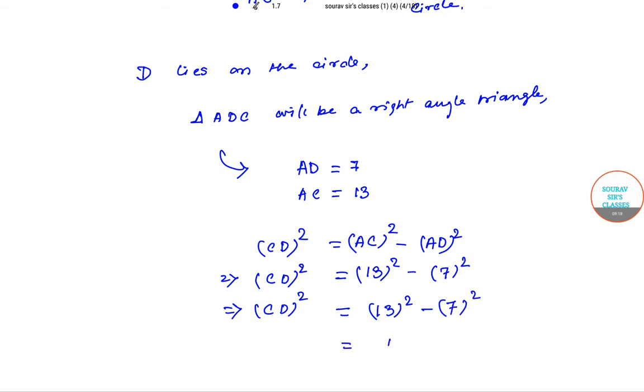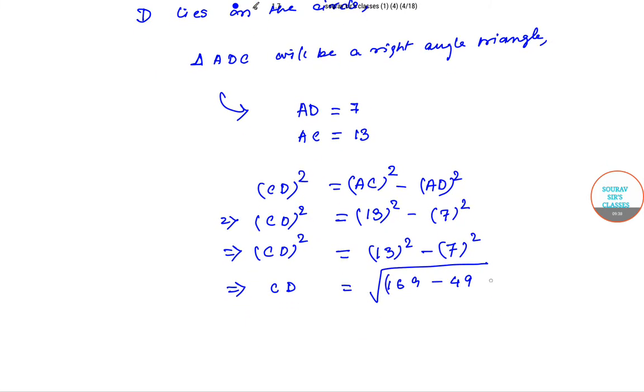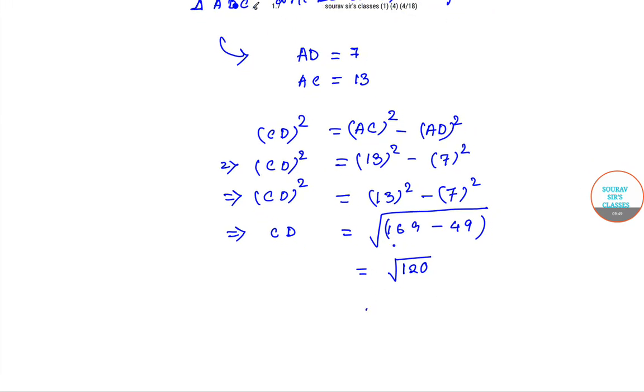CD squared equals 13 squared minus 7 squared. 13 squared is 169 and 7 squared is 49. If we solve it, CD will be equals to square root of 169 minus 49, which is square root of 120. That is 10.95.